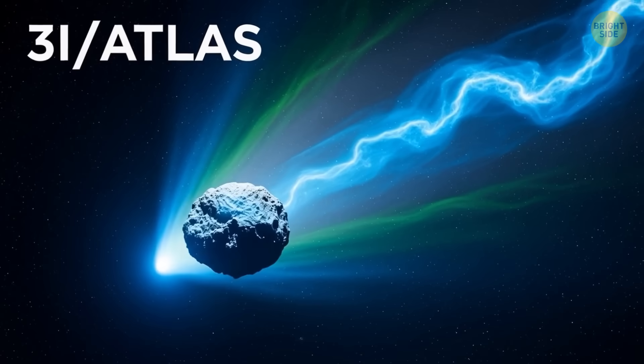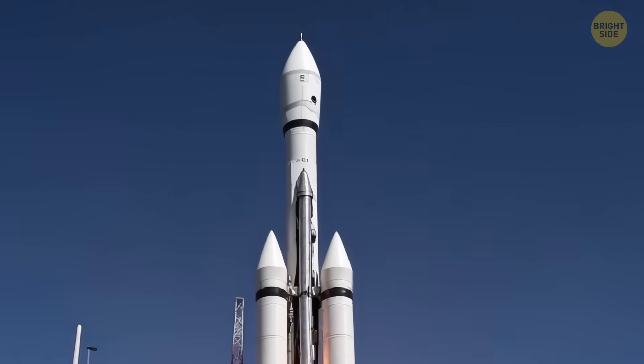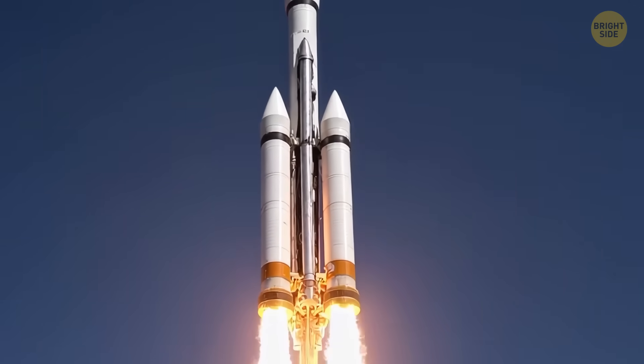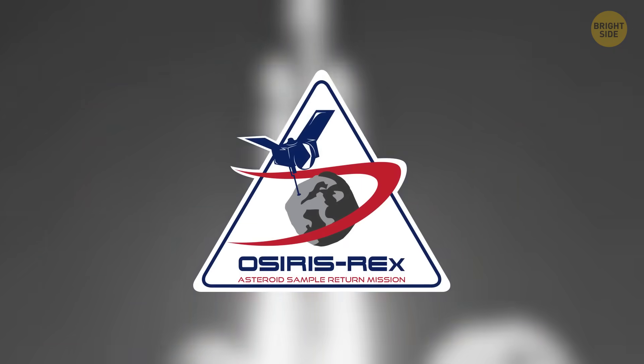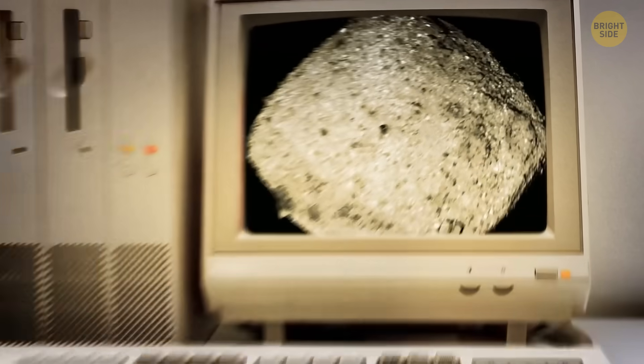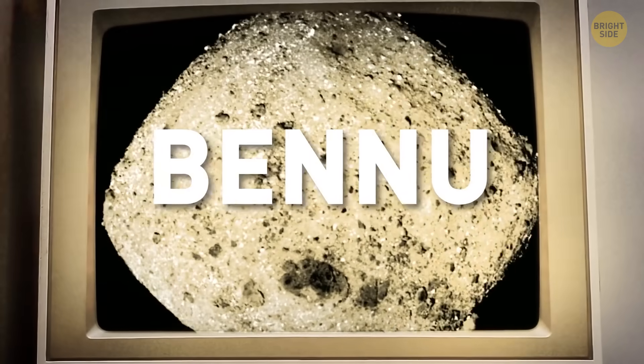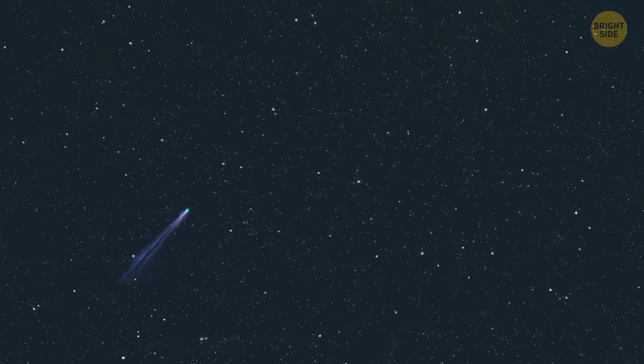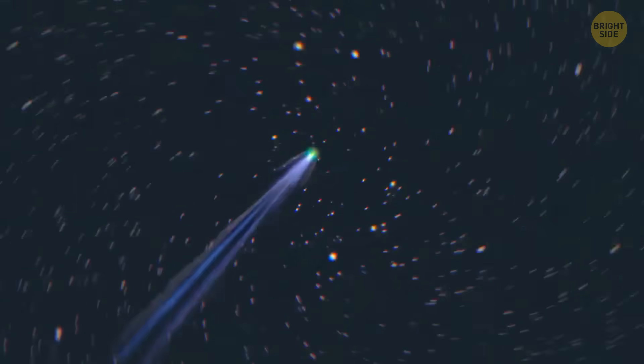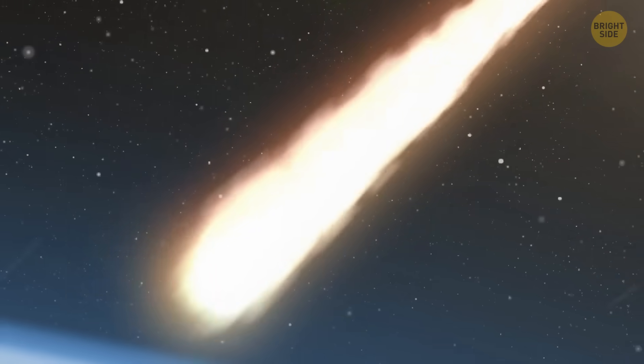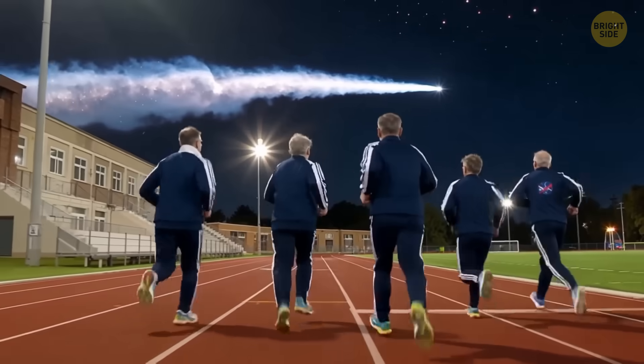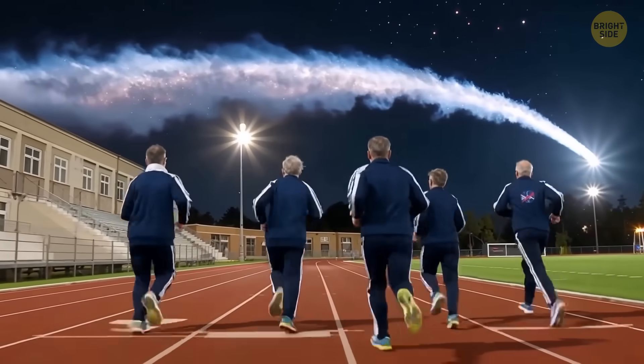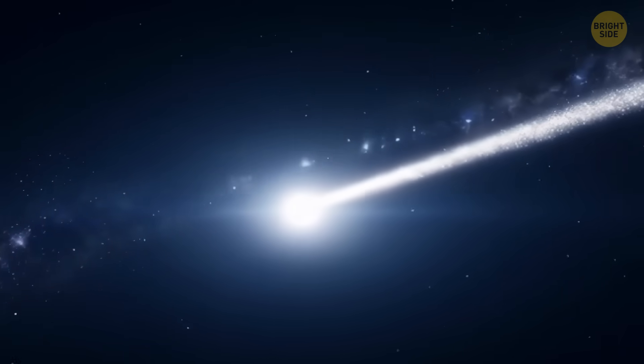You might be wondering if we could actually visit this comet. Well, we've sent spacecraft to some space rocks before, like NASA's OSIRIS-REx mission, which landed on an asteroid called Bennu in 2020, grabbed some samples, and brought them back to Earth. That was a big deal! People have thought about doing the same thing with other interstellar visitors, but for now, visiting 3i Atlas just isn't happening. It's a wild comet zooming through, and we don't have any missions ready or built to catch up to it. So right now, astronomers are in a bit of a race to learn as much as they can about this rare visitor before it disappears again.